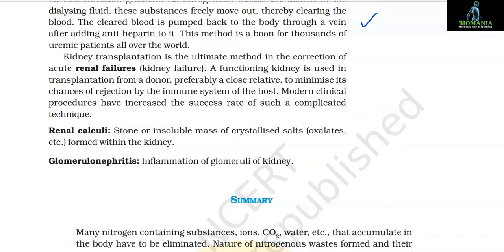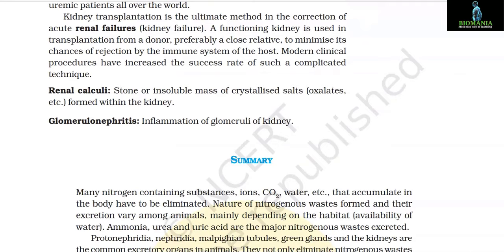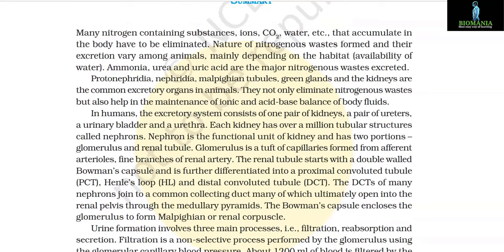Kidney transplantation is the ultimate method for correction of acute renal failures. A functioning kidney from a donor, preferably a close relative, is used to minimize chances of rejection by the immune system of the host. Modern clinical procedures have increased the success rate of this complicated technique. Other disorders include renal calculi — a stone or insoluble mass of crystallized salts (oxalates etc.) formed within the kidney — and glomerulonephritis, which is inflammation of the glomeruli of the kidney.